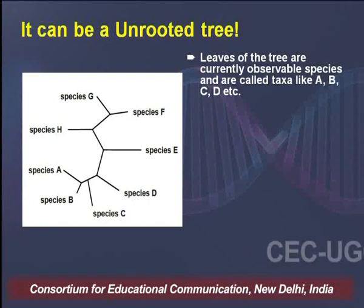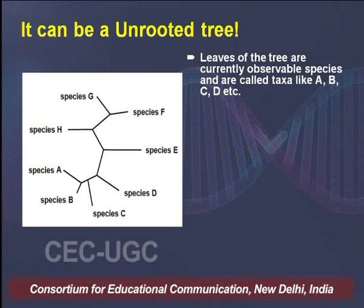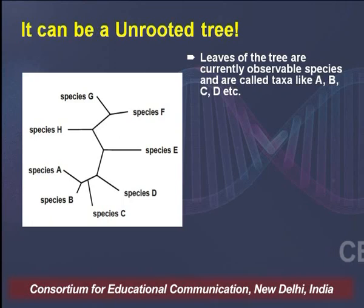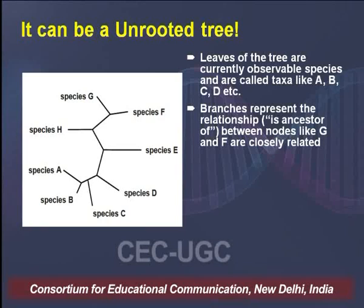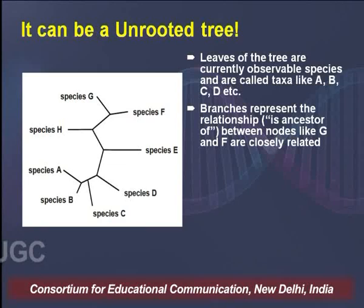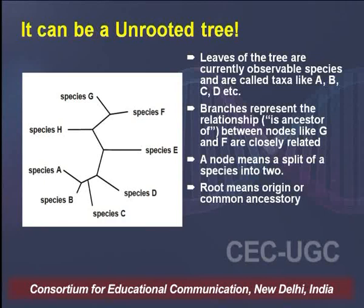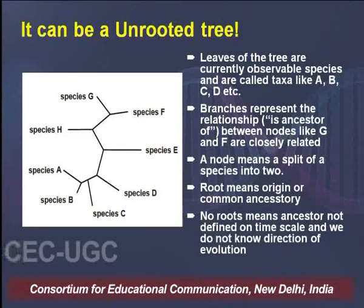A tree which we draw can be a rooted tree or an unrooted tree. In an unrooted tree, the leaves represent present-day species — called taxa, like A, B, C, D — and the branches represent the relationship among them. A node represents that a split occurred between two species, and root means the origin — the common ancestry. In an unrooted tree, we cannot say where it originated; no root means the ancestor is not defined and we do not know the direction of evolution.